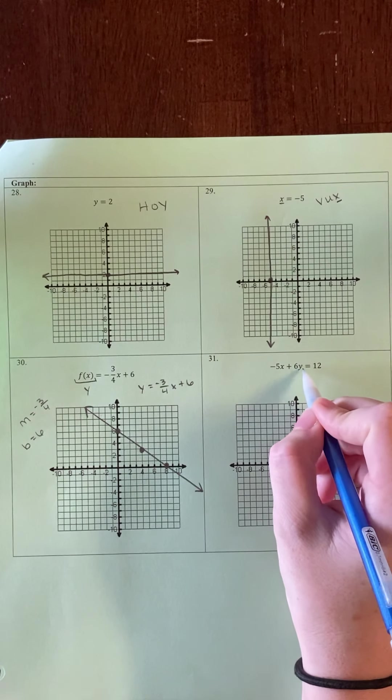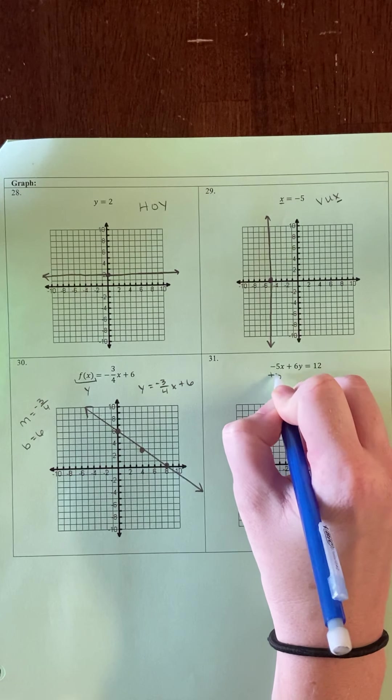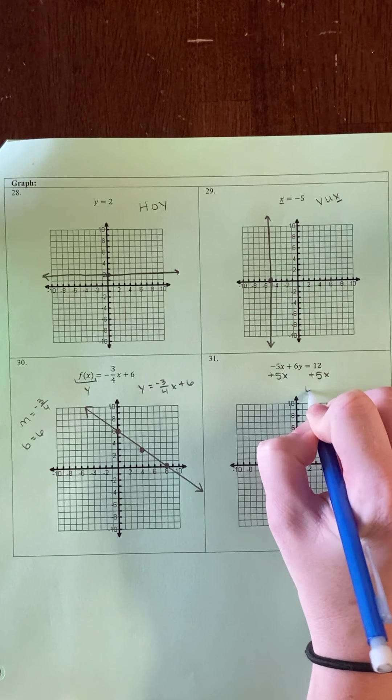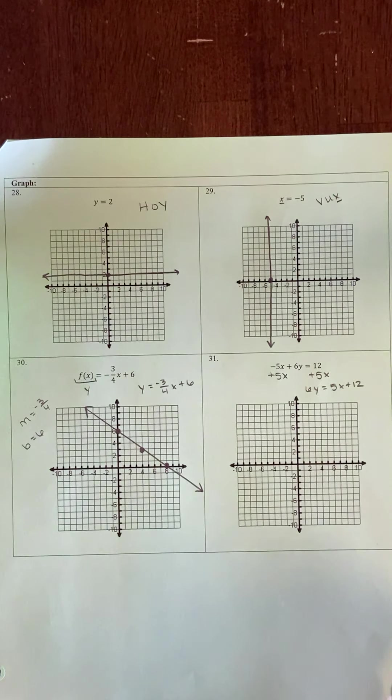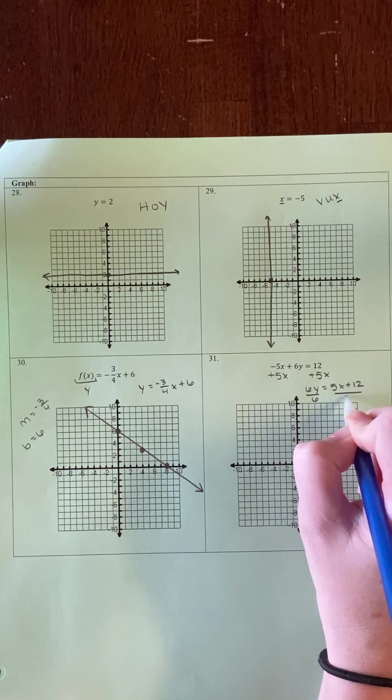That means I want to solve for y. To do so, I'm going to add 5x to both sides. 6y equals 5x plus 12. I divide both sides by 6.